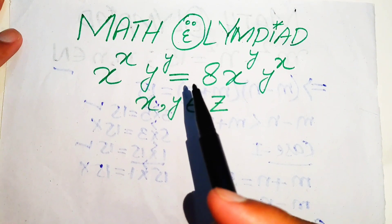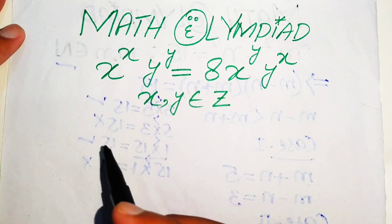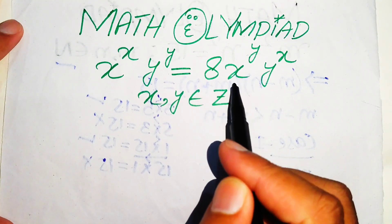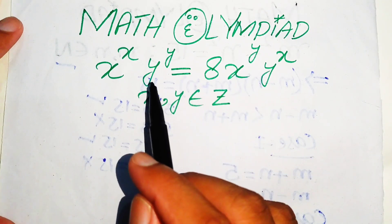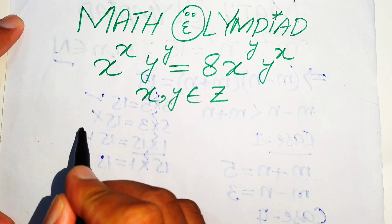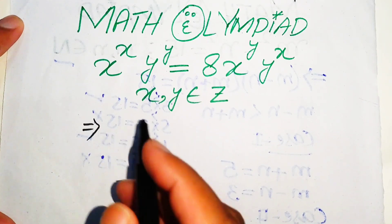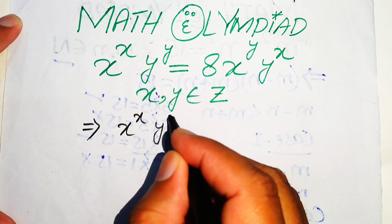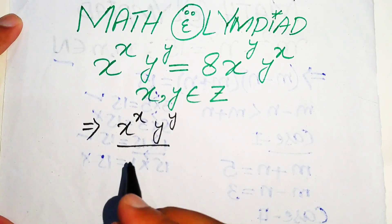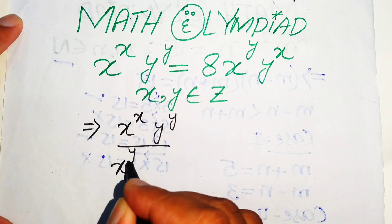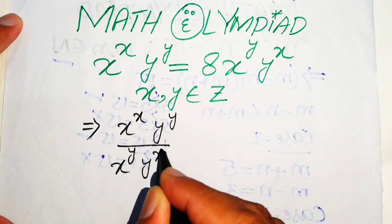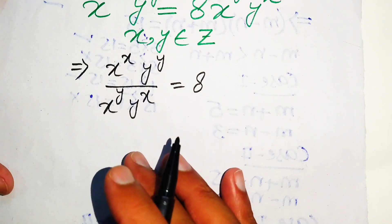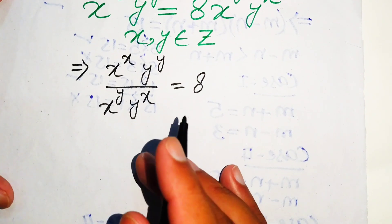The first step is to move the two terms x to the power of y and y to the power of x to the left hand side, so the left hand side becomes x to the power of x times y to the power of y divided by x to the power of y times y to the power of x, equals 8.